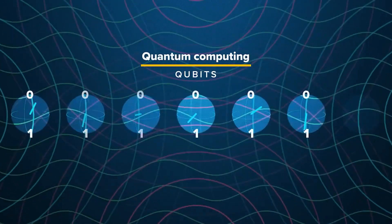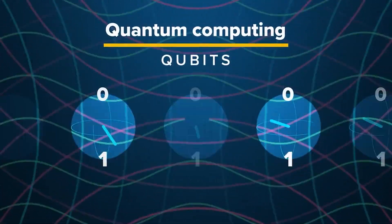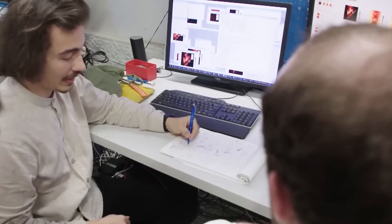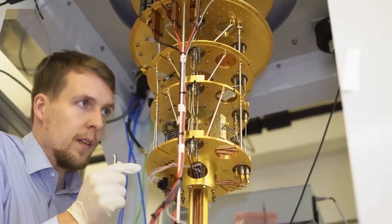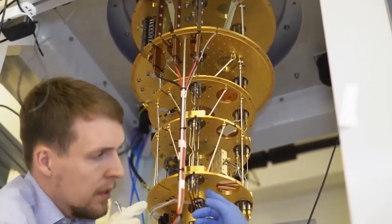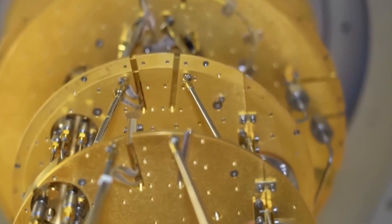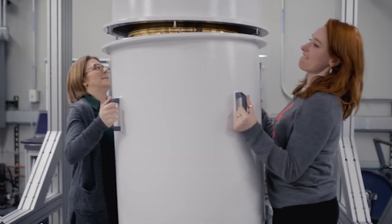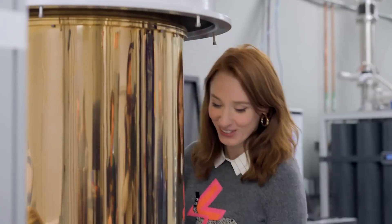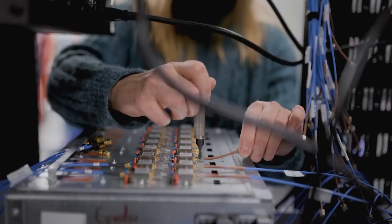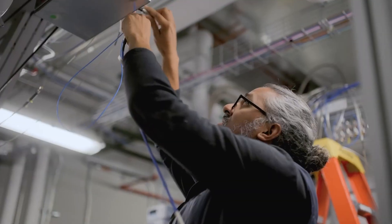The more qubits a system contains, the harder it becomes to keep them all stable at the same time. Each additional qubit adds another source of potential failure. To keep qubits stable, most quantum systems developed in the West rely on superconducting circuits that must be cooled to temperatures close to absolute zero. At these temperatures, electrical resistance disappears and quantum effects can be preserved long enough to perform calculations.